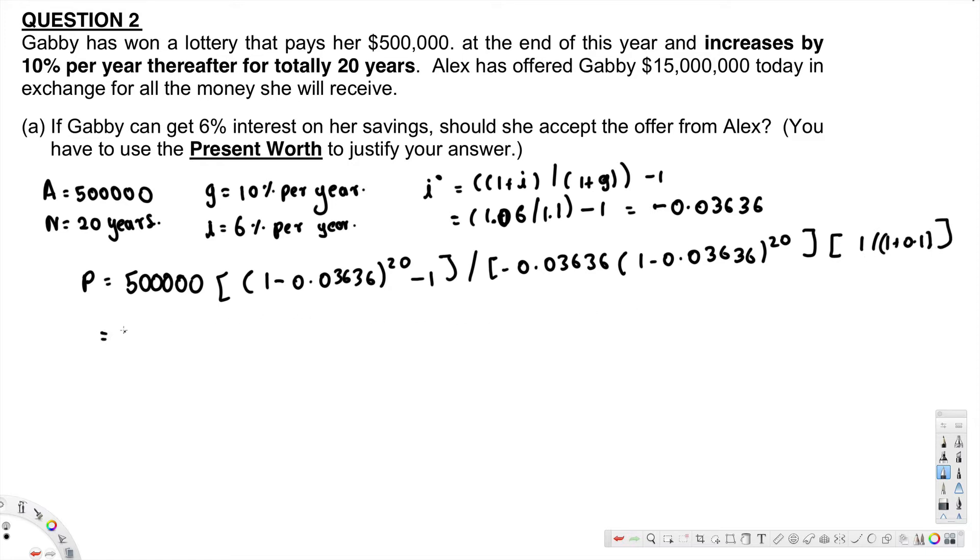And if you calculate this one, $500,000 multiplied by 27.44044, that is equivalent to $13,720,220.